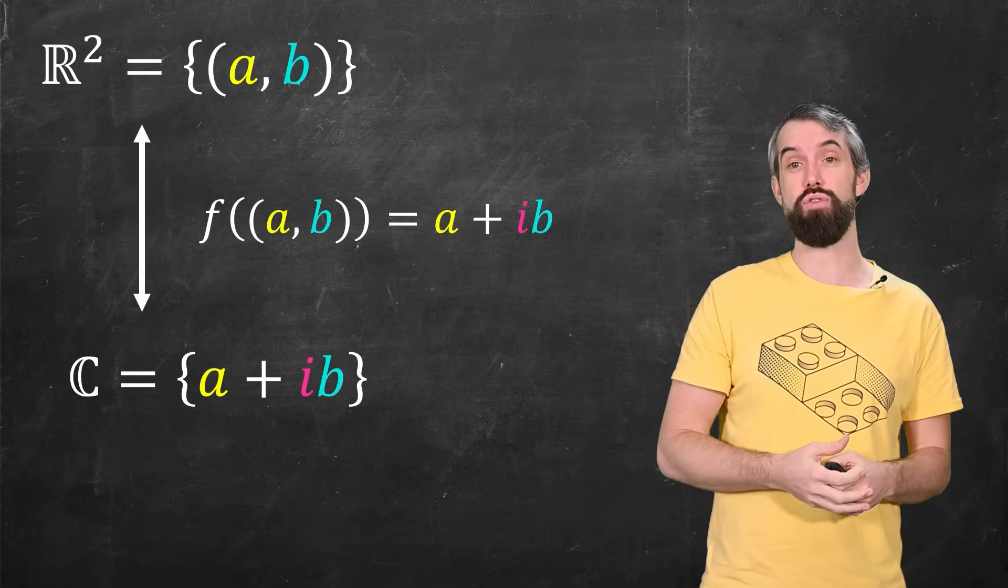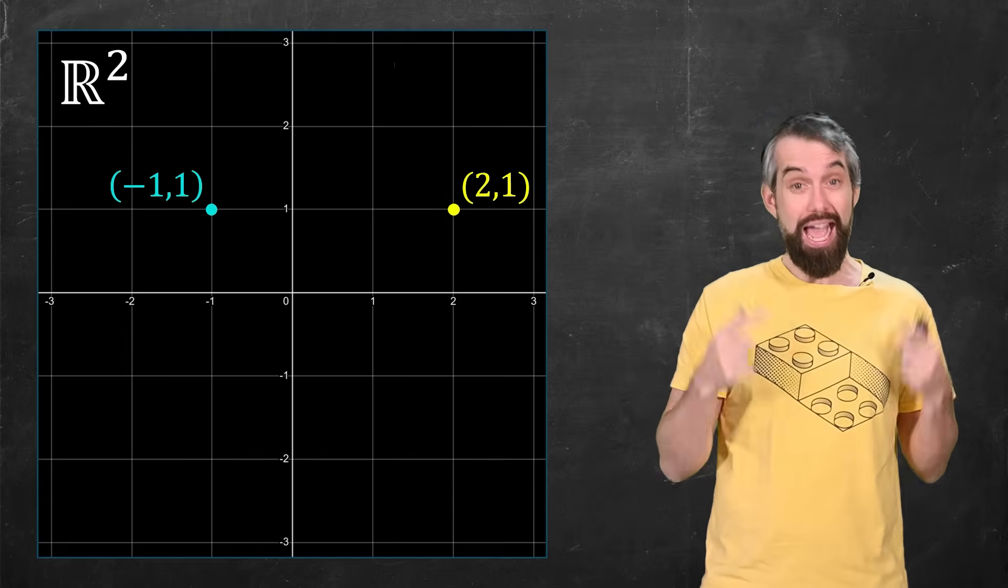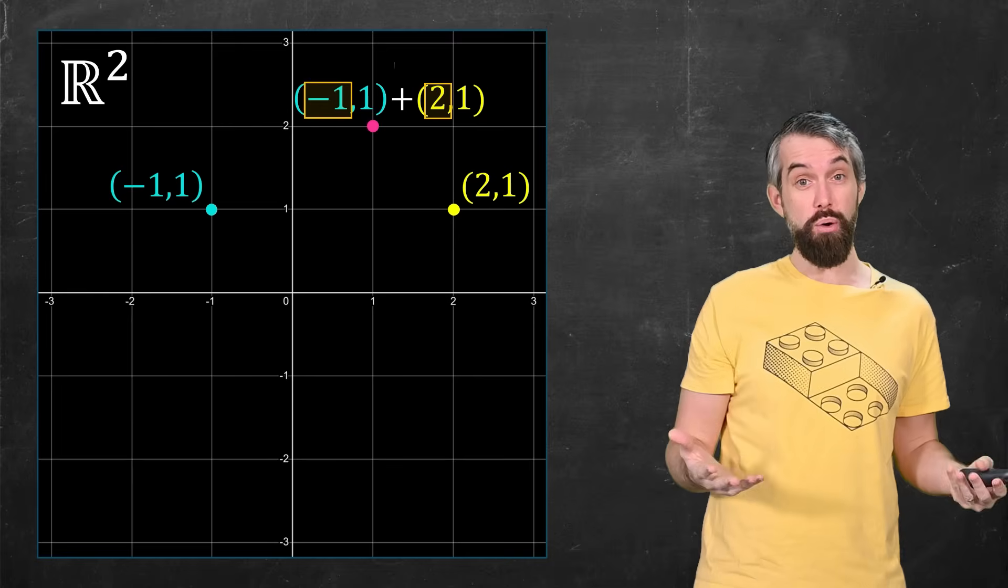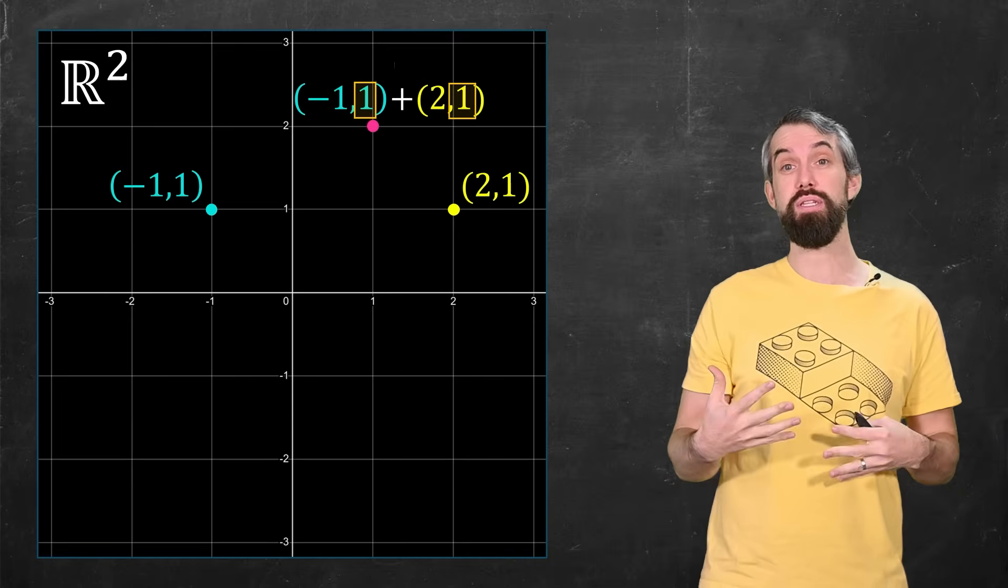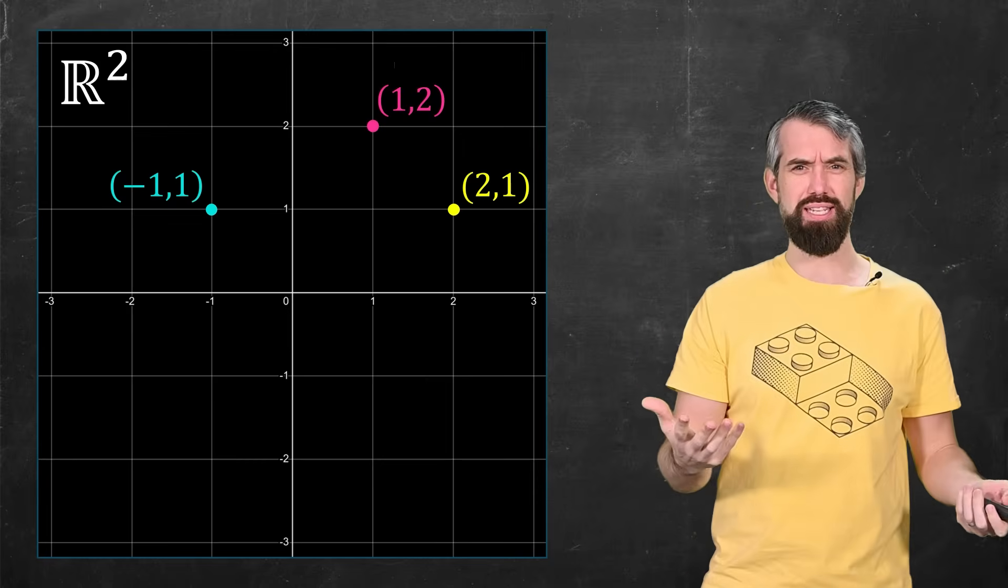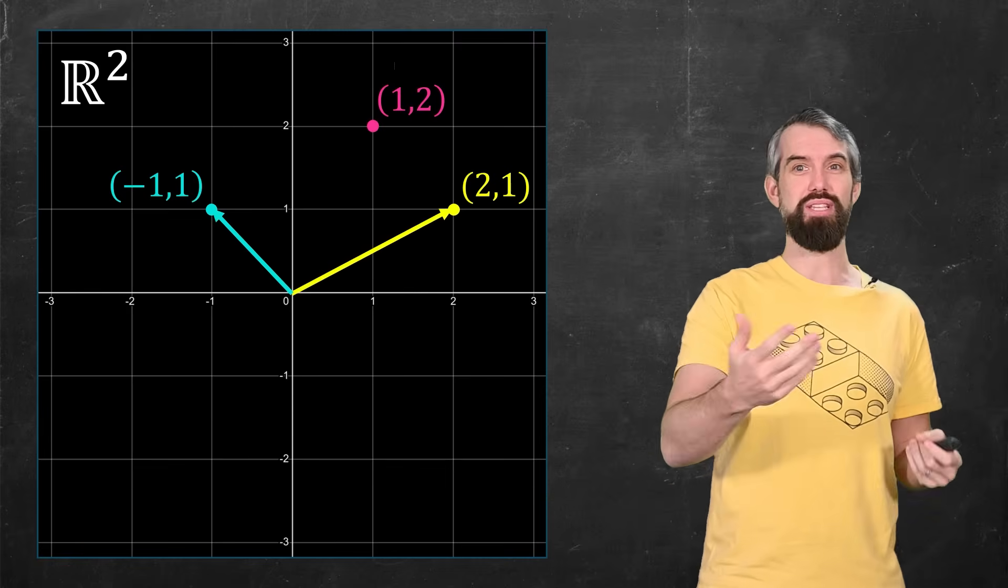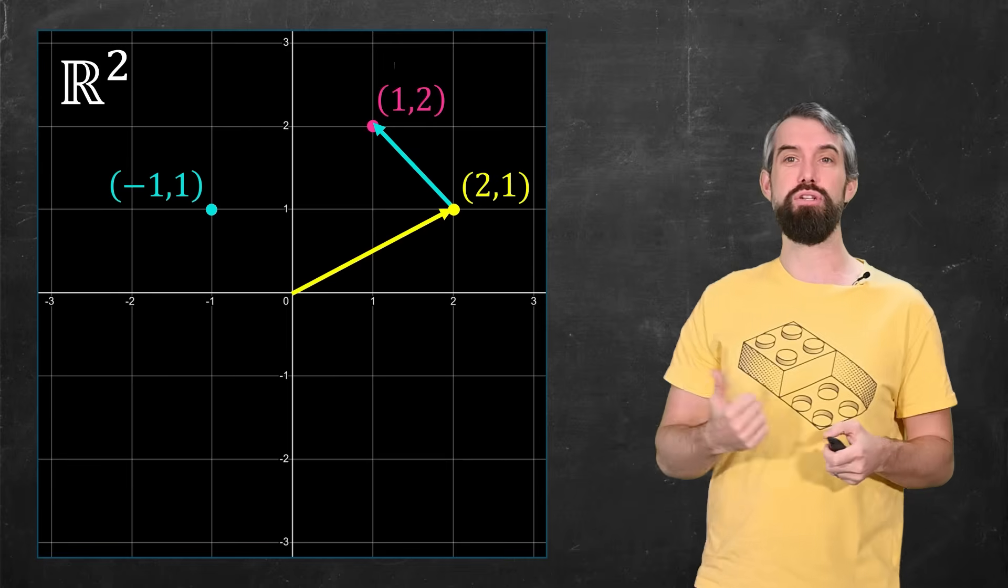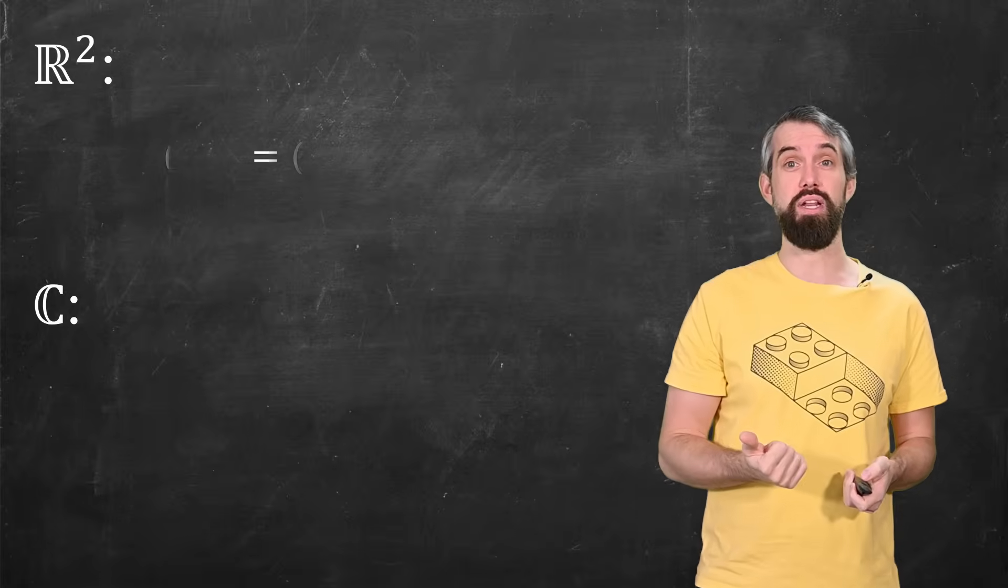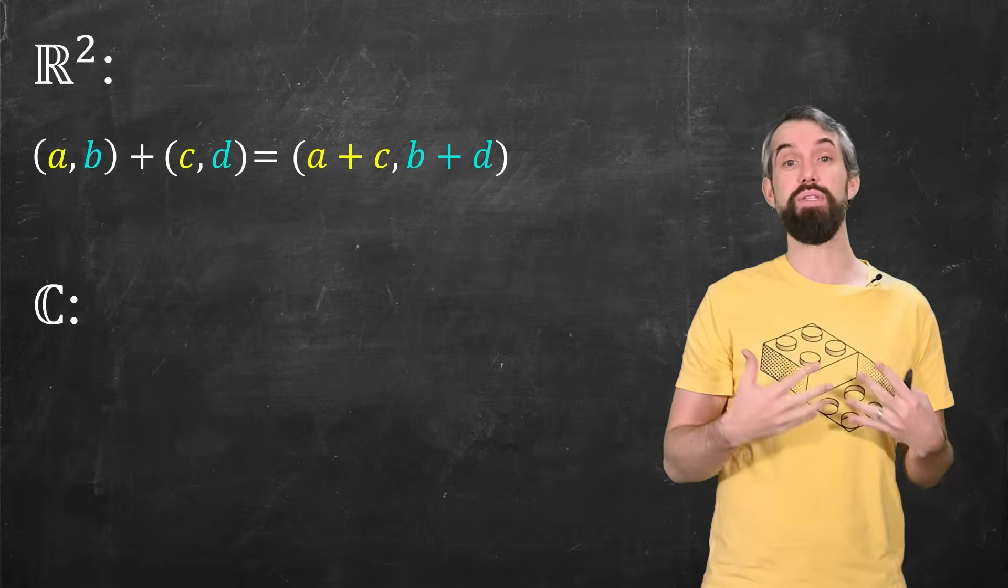For example, both of these have an additive structure. In the real numbers, if I take a point, say 2,1 and a point minus 1,1, I can add those together. Addition in the real plane works by adding the first components and then adding the second components. That's going to leave me with a point like 1,2. So in other words, the additive structure to do it in complete generality is to take ab plus cd. You add the first components to get ac and the second components to get bd.